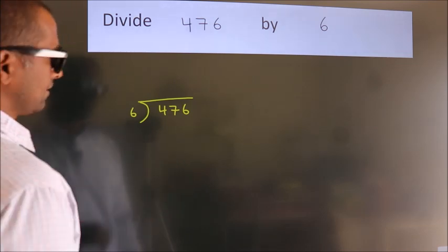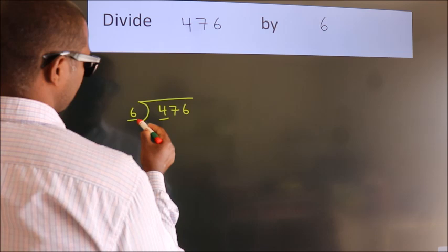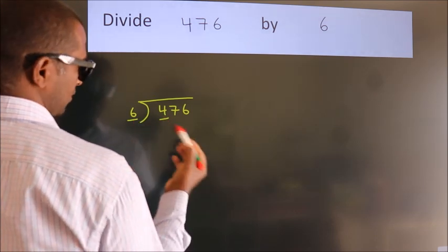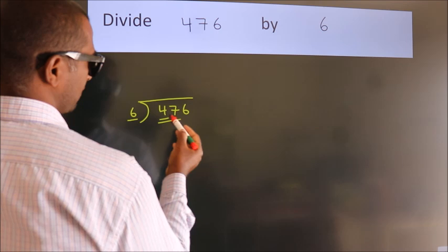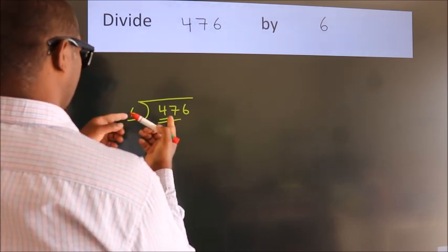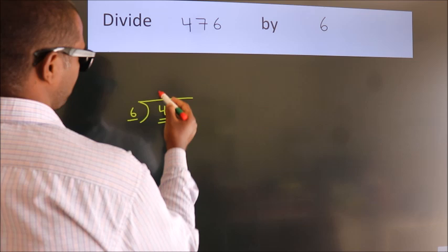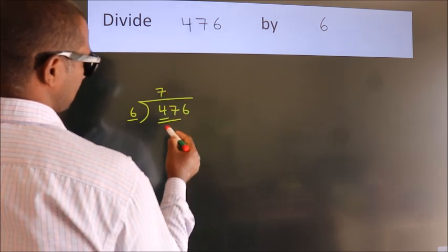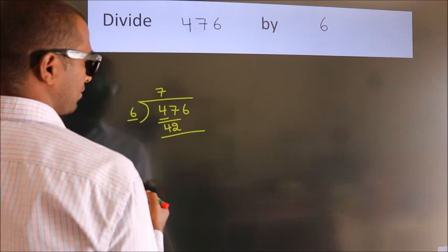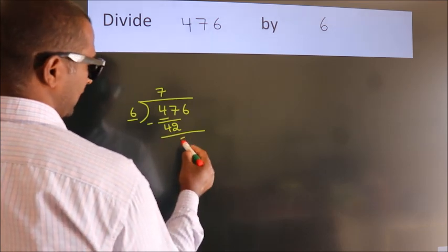Next, here we have 4. Here 6. 4 smaller than 6, so we should take two numbers, 47. A number close to 47 in 6 table is 6 7s 42. Now we should subtract. We get 5.